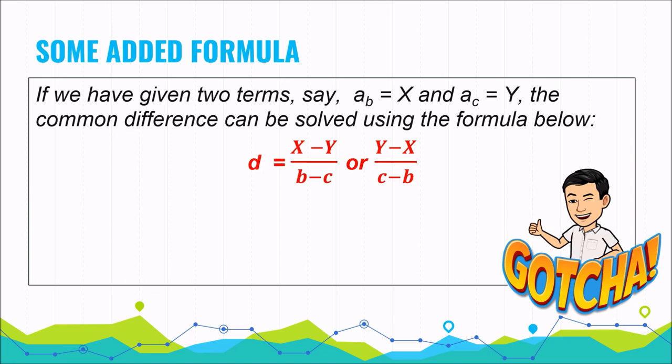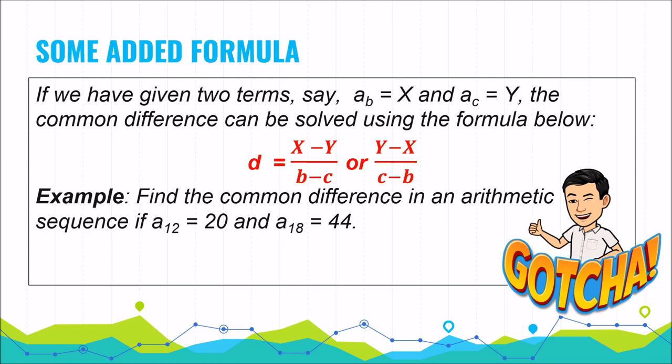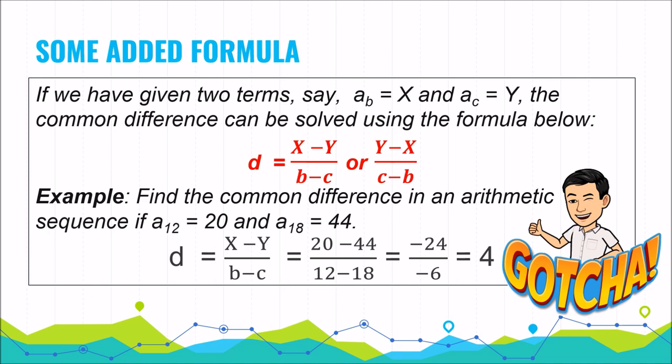Example: find the common difference in an arithmetic sequence if a sub 12 equals 20 and a sub 18 equals 44. Plugging in, the common difference equals 20 minus 44 over 12 minus 18, which gives negative 24 over negative 6. Therefore, the common difference is 4.